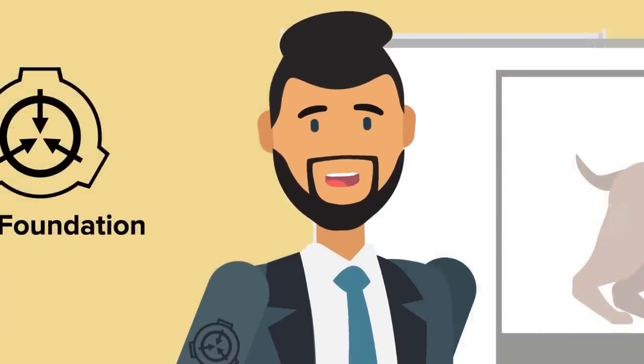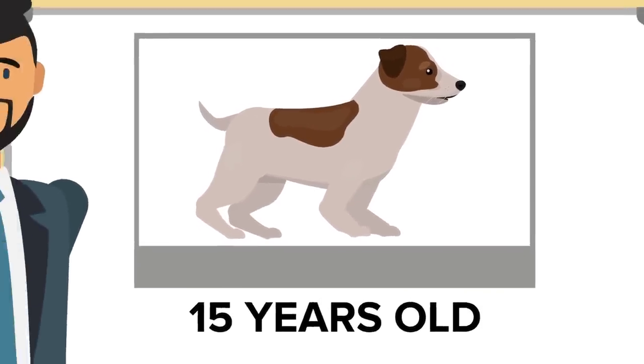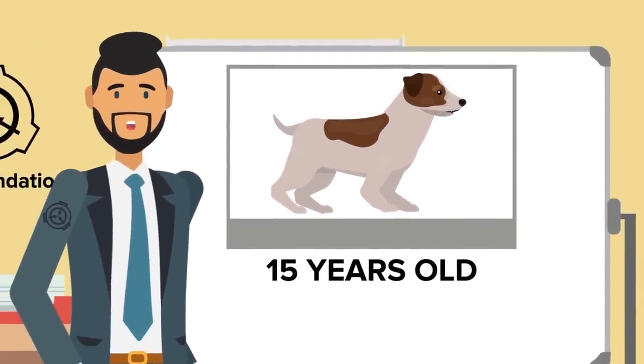He was almost fifteen in human years, which by all accounts is an impressive age for a dog, especially one of Poncho's size and breed.